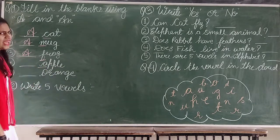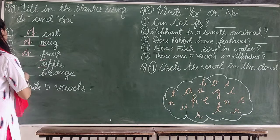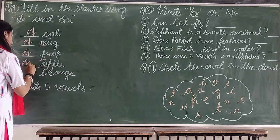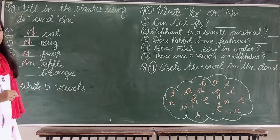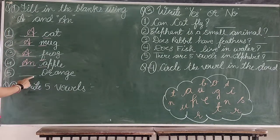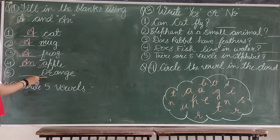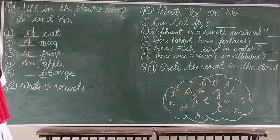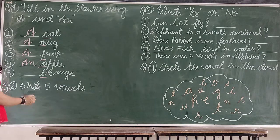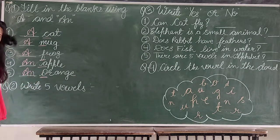Next, apple. Apple starts with A. Is A a vowel? Yes. A is a vowel, so we have to use AN here. Next, orange — O-R-A-N-G-E. Orange starts with O. Is O a vowel? Yes. So we have to use AN here.